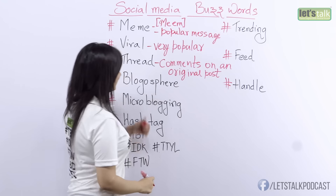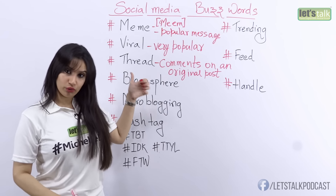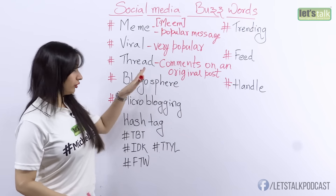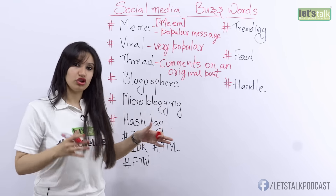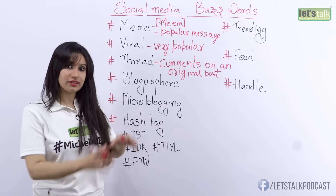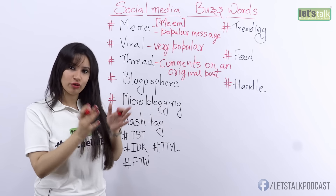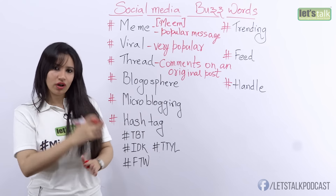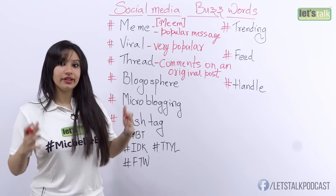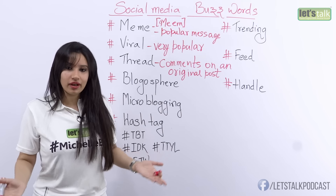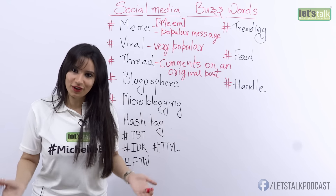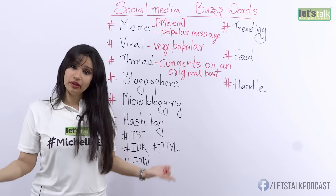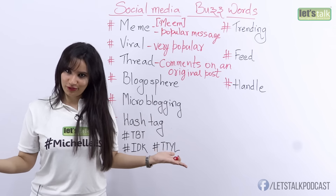A thread usually only develops on an original post — you cannot have it on a shared post; it's always on an original post. People comment one after another and it becomes a discussion where people are talking about the video or some other topic.